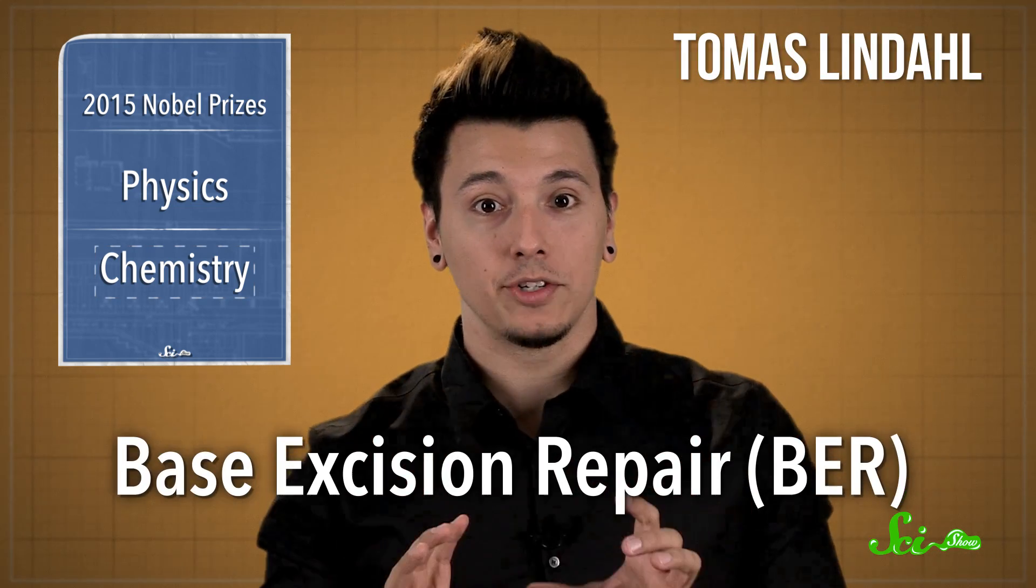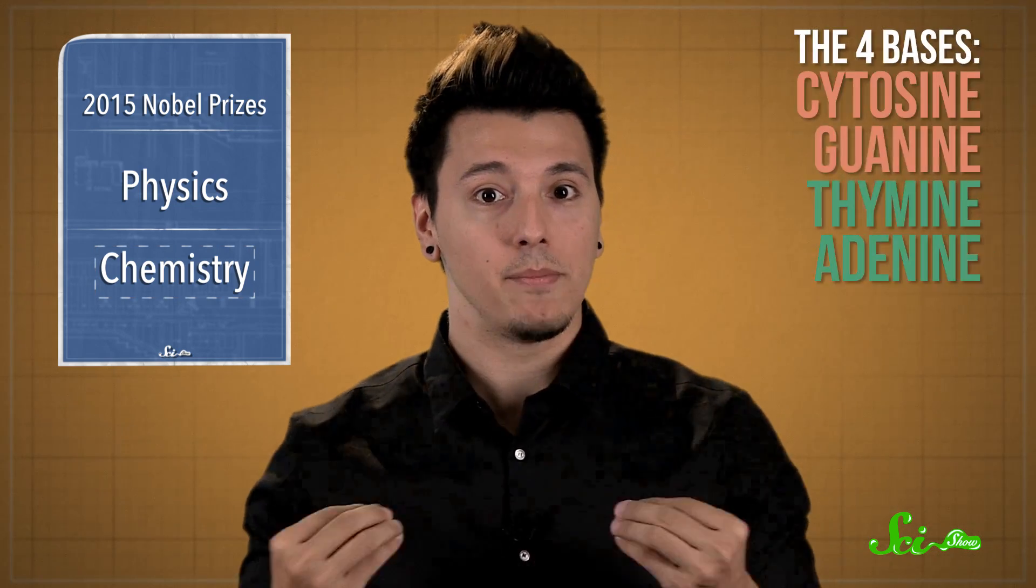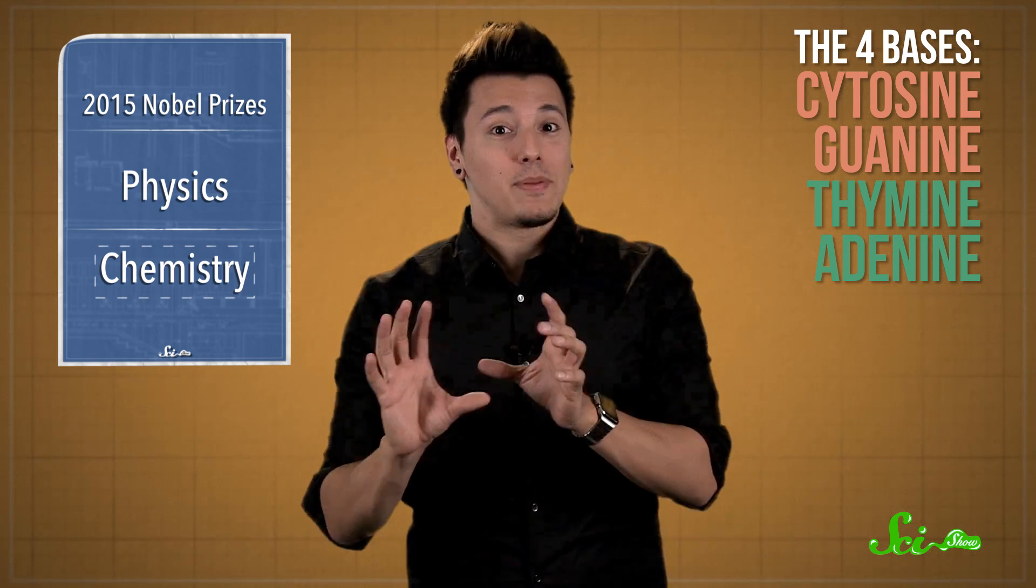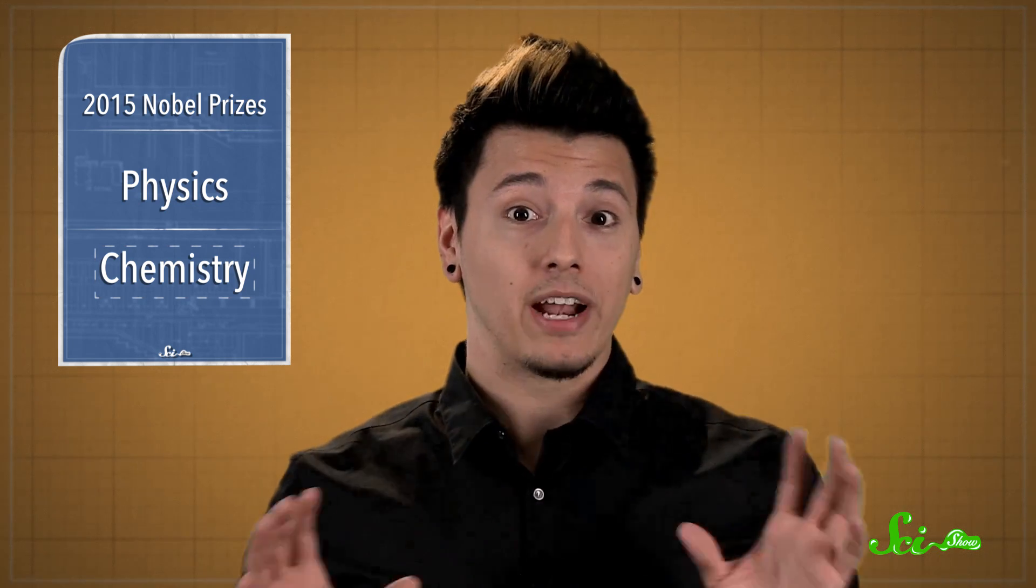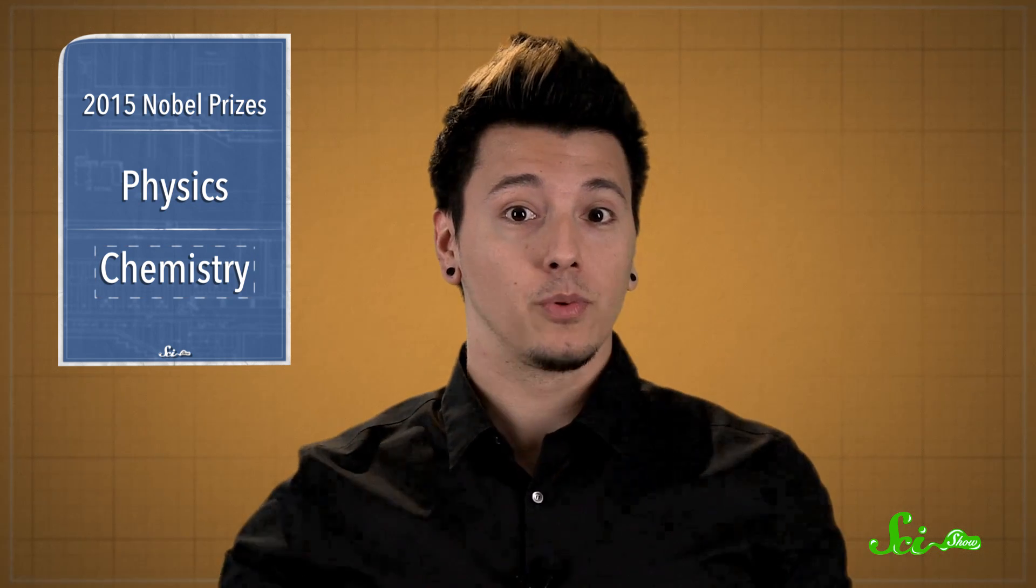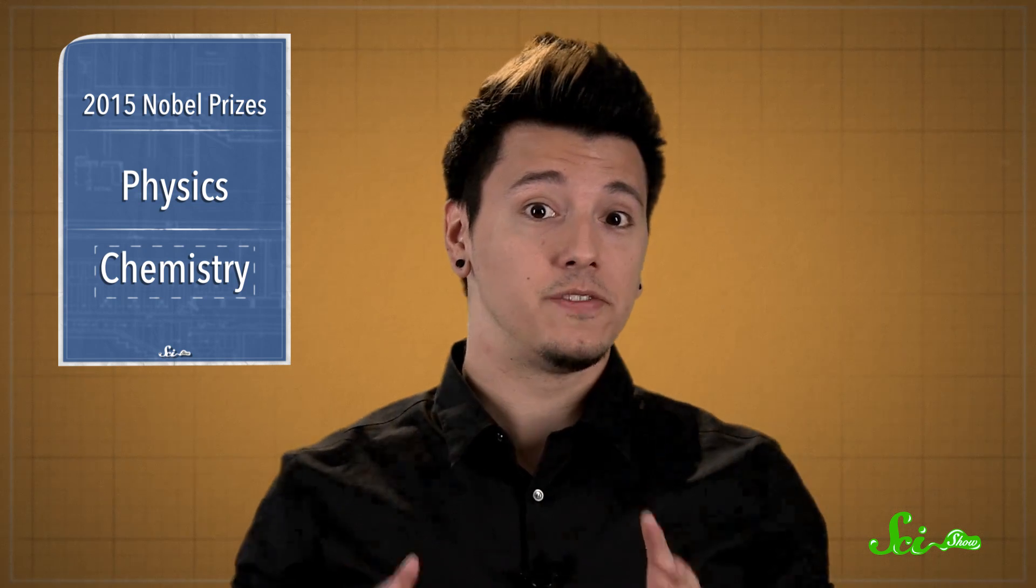Tomas Lindahl's work in 1974 led to the discovery of base excision repair. This is the mechanism that repairs the most common type of damage, which is spontaneous decay of one of the bases that make up our genetic code. For example, cytosine, the DNA base that normally pairs with guanine, can spontaneously lose part of its molecule to form uracil. This happens all the time, and when it happens, the newly formed uracil pairs with adenine instead. So that section of DNA looks all different.